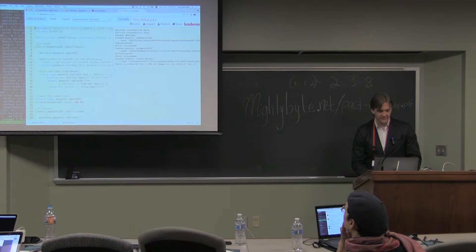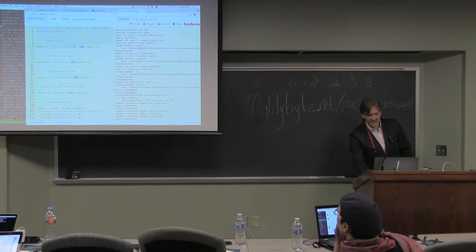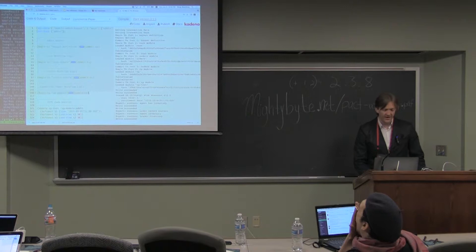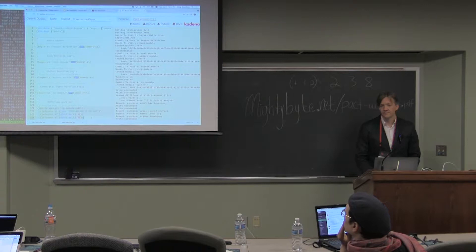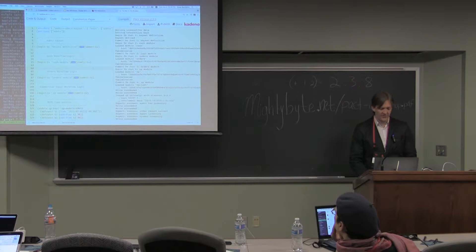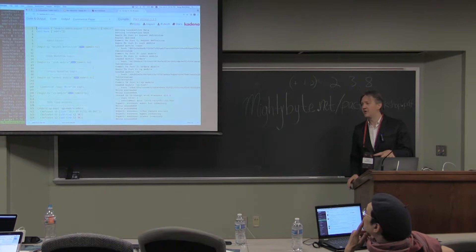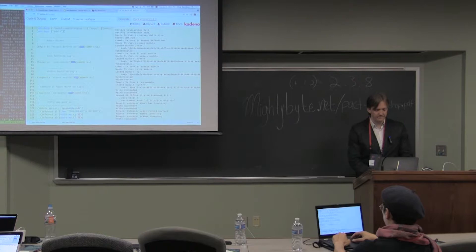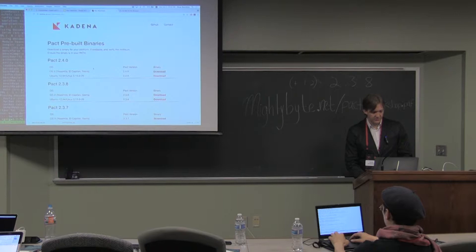We have a few other demo contracts. All of them have env-data and env-keys at the top, setting up key things needed to demo the actual contract. So env-data, env-keys, begin-tx — all of these things are REPL things. The actual PACT stuff starts down here. This was not obvious to me when I started, and I think it's an important thing to point out.